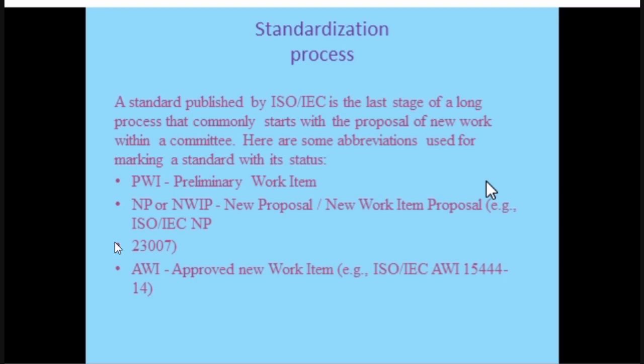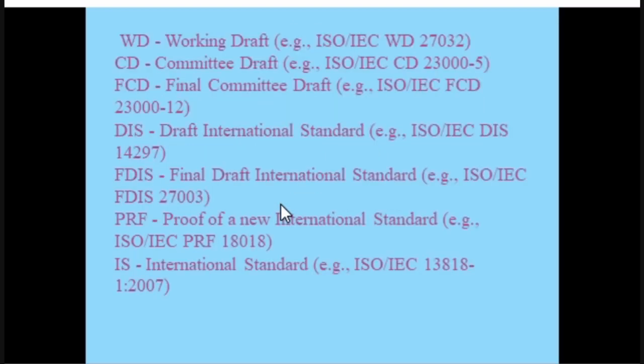These are common acronyms used in the standardization process that you need to know. PWI stands for Preliminary Work Item. NP is New Proposal. NWIP is New Work Item Proposal. AWNIP is Approved New Work Item. WD is Working Draft. CD is Committee Draft. FCD is Final Committee Draft. DIS is Draft International Standard. FDIS is Final Draft International Standard. If you are familiar with these acronyms, you will know what they refer to.